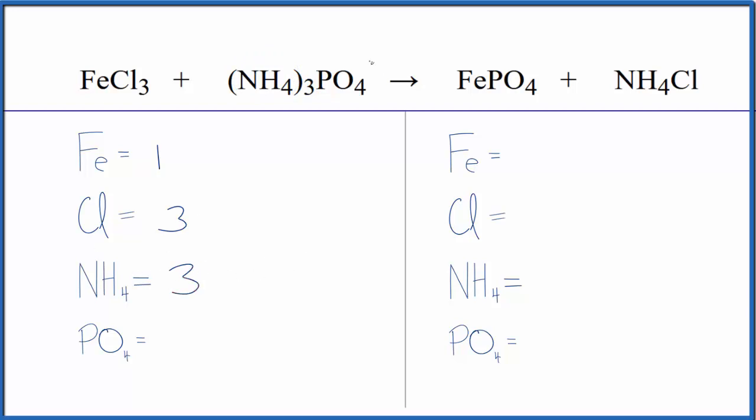Same for the phosphate here and here, so we have one phosphate on the product side. We have one iron, one chlorine, one ammonium ion, and one phosphate. So you can see it makes things a lot neater when we go ahead and balance the equation.